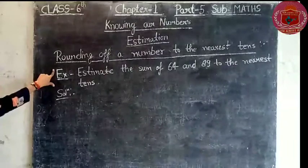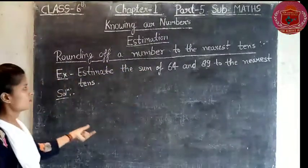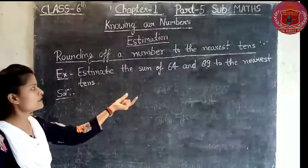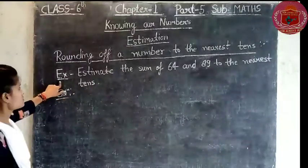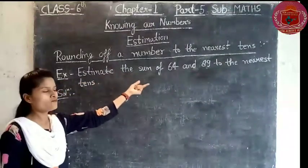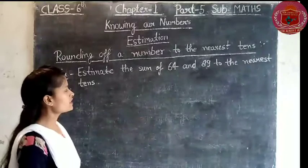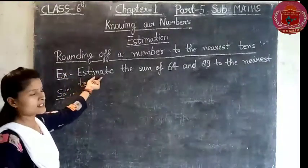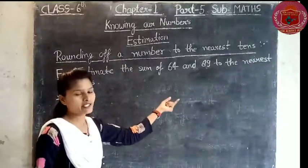Now let's take an example. The example is: round up the given numbers to the nearest tens. This is the sum of 64 and 89, rounded to the nearest ten.